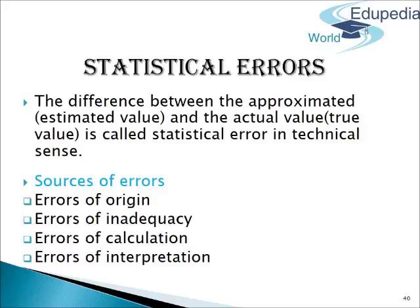Errors of Origin: These errors arise on account of an inappropriate definition of the statistical unit, scale, or defective questionnaire. For example, using the wrong scale to measure the height of students, or measuring height to the nearest inch (approximated). The difference may also occur due to differences in measuring tapes caused by manufacturing defects. In physics or chemistry, such errors of measurement occur while taking readings on various instruments.